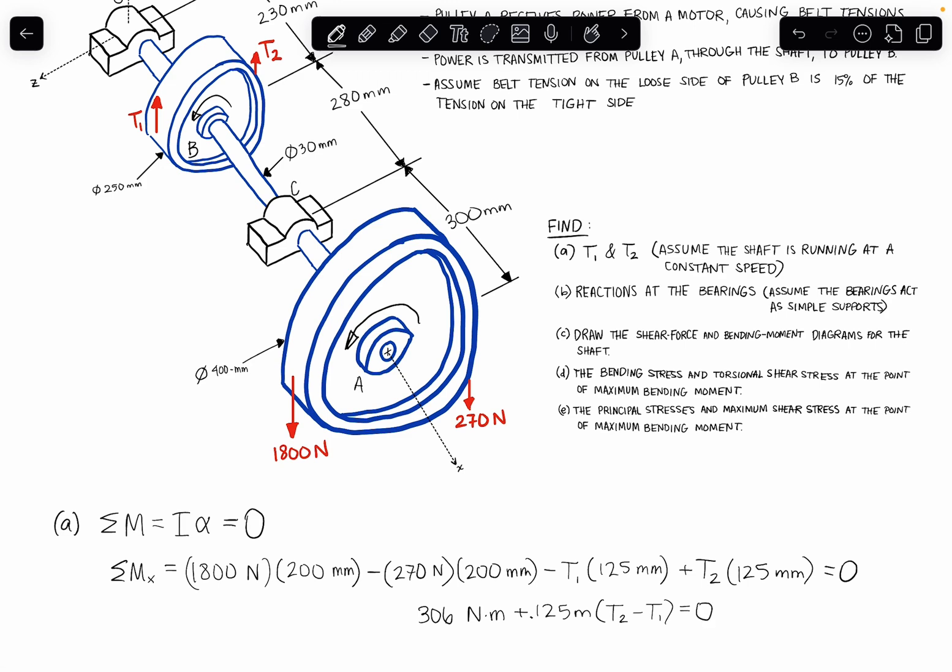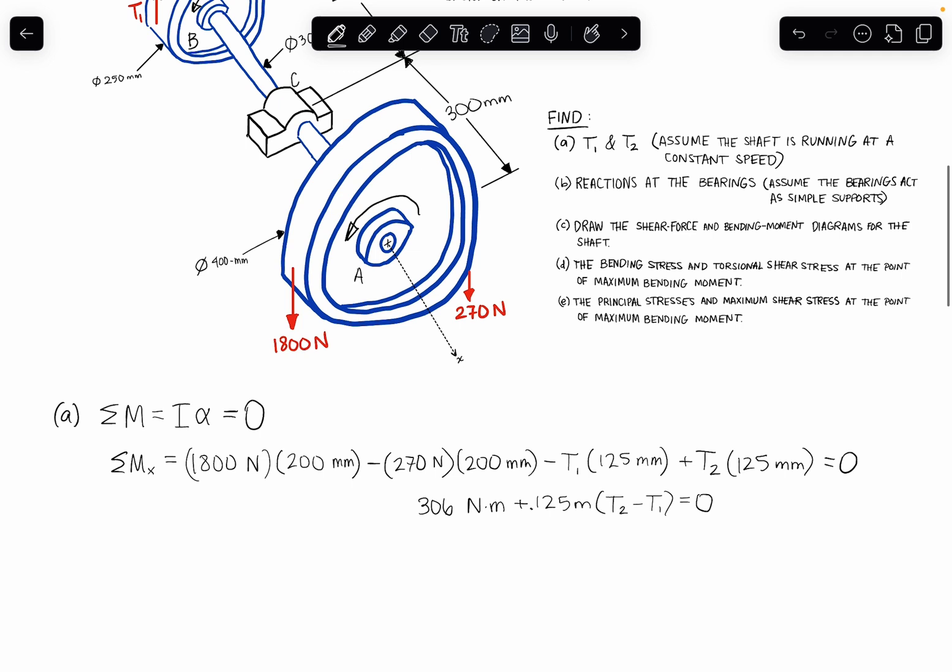Okay, so I'm just rearranging this equation a little bit, and I can simplify this a little bit more to see that T2 minus T1 is going to be equal to negative 306 divided by 0.125. Okay, so negative 2,448.